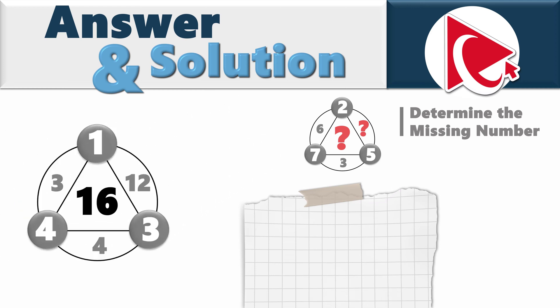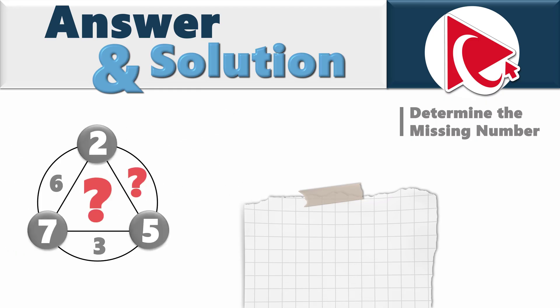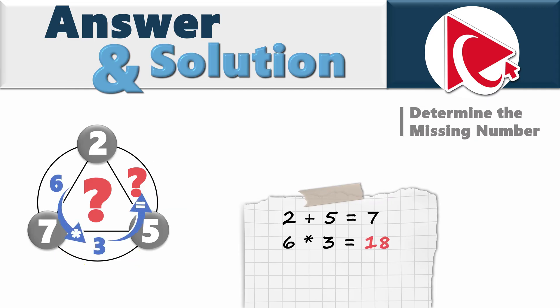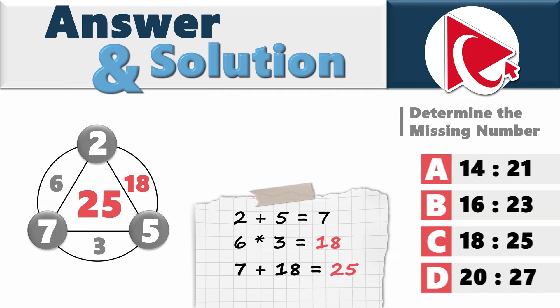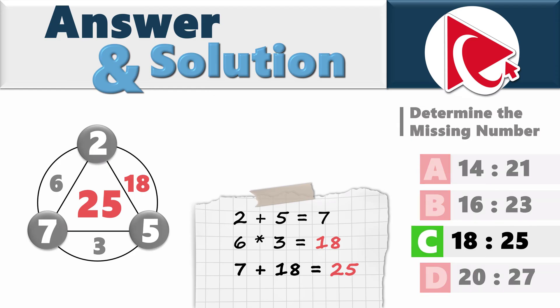Make sure you verify the pattern in the middle shape. Switching to the third shape with two numbers missing: 2 plus 5 equals 7 in the small circles, and 6 multiplied by 3 equals 18 in the large circle. Then 7 plus 18 equals 25. So the correct answer is choice C — numbers 18 and 25.